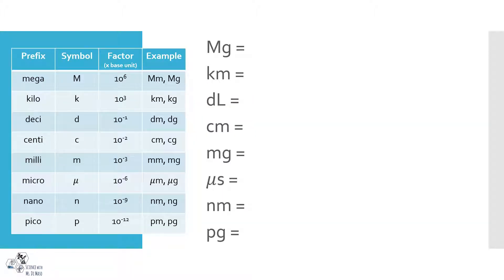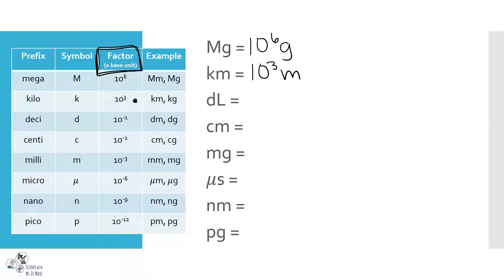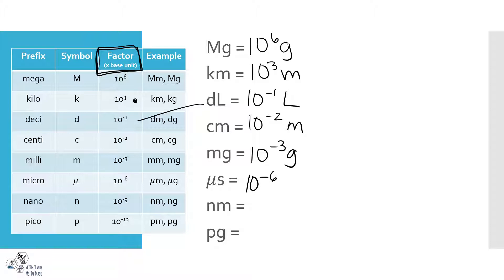Let's go over some conversion factors. One megagram equals 10 to the sixth grams. One kilometer equals 10 to the third meters. A deciliter is 10 to the negative one liters. A centimeter is 10 to the negative two meters. Milli is 10 to the negative third grams. Microseconds are 10 to the negative six seconds. Nanometers are 10 to the negative nine meters. Picograms are 10 to the negative 12 grams.